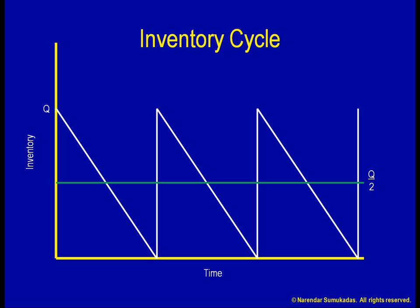With less frequent order placement, our ordering costs can be amortized over a larger quantity. On the other hand, the larger the quantity Q, the larger the inventory we will need to carry. The larger our inventory, the greater will be the costs associated with holding that inventory.